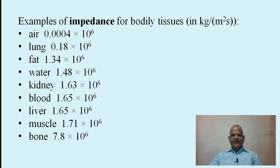Examples of acoustic impedance for bodily tissues: air has a low impedance of 0.004, then lung, fat, water, and fluids have higher impedance. Kidney, blood, liver, and muscle follow, and bone has the highest impedance.